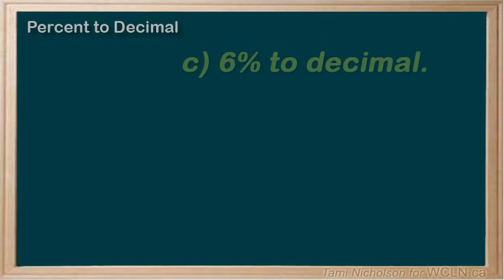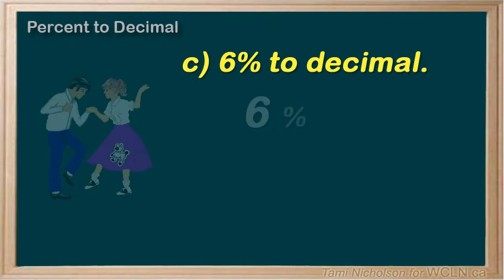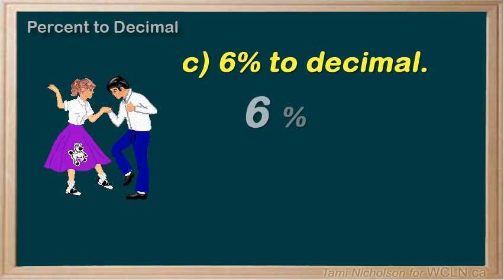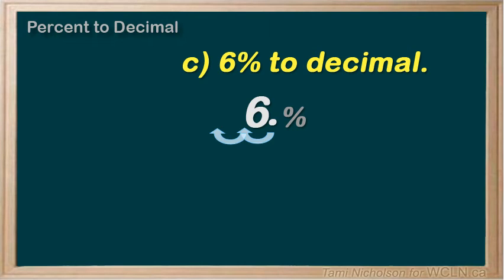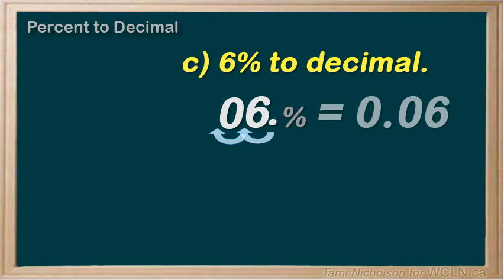Here we have 6 percent. Divide by 100. Do your decimal dance — move the decimal point two spaces to the left: move one, move two. Notice how I am putting in a zero here. And 6 percent equals 0.06.